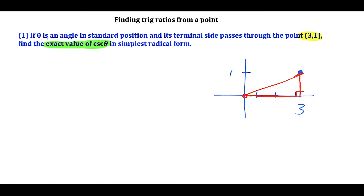So theta is actually referring to this angle over here, because if it's starting in standard position — standard position is the positive side of the x-axis — it's spinning counterclockwise to the point (3, 1). We label these sides: we're going to the right three units and up one unit. And to find cosecant theta, we need the hypotenuse of this right triangle.